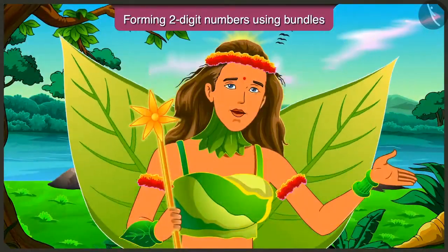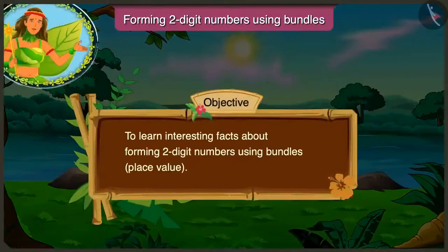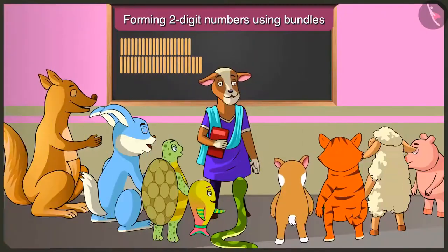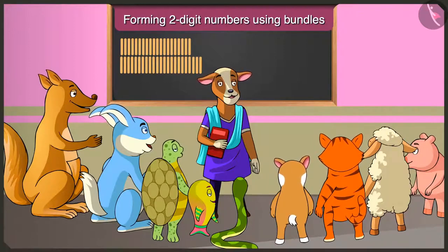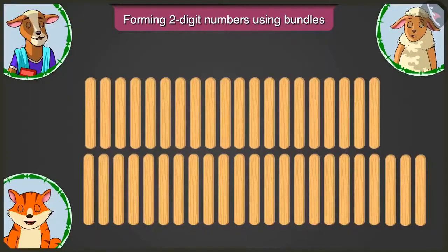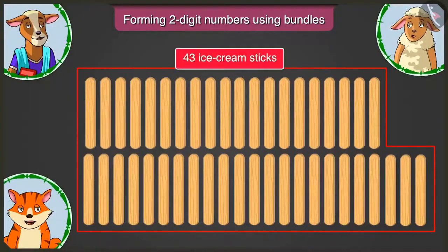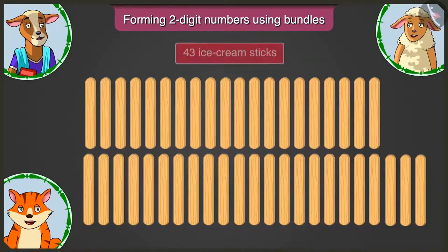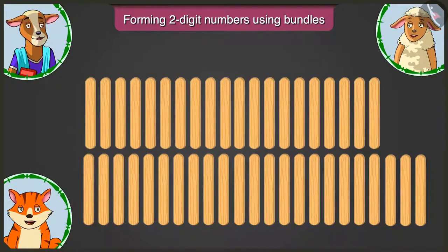Children, today we will learn interesting facts about forming two-digit numbers using bundles — place value. Children, can you make bundles of tens out of these forty-three ice cream sticks? But ma'am, these are forty-three ice cream sticks. How can we make bundles of tens out of these? Let me explain.